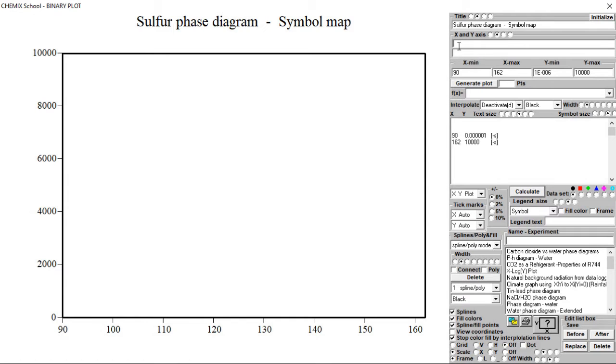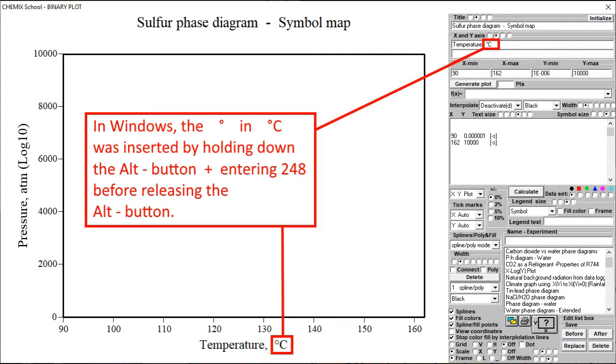Let the X axis represent the temperature in degrees Celsius. To insert the degree symbol in Windows, hold the Alt key on the keyboard down during the insertion of the ASCII code 248. The degree symbol will be displayed when releasing the Alt key.